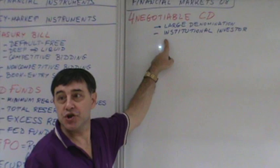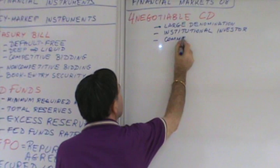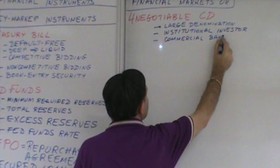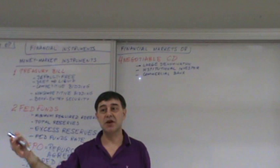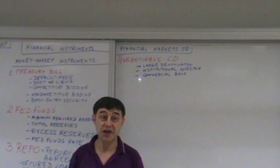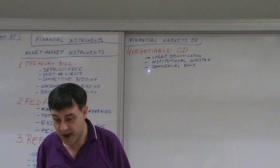The typical buyer is an institutional investor. The typical seller — we call them the issuer — is typically a commercial bank. But because it's a deposit, a certificate of deposit, it can be issued by any other depository institution, like savings and loan associations.